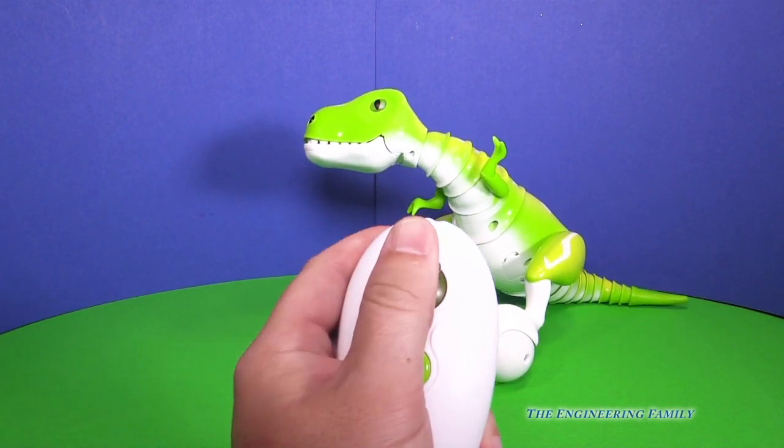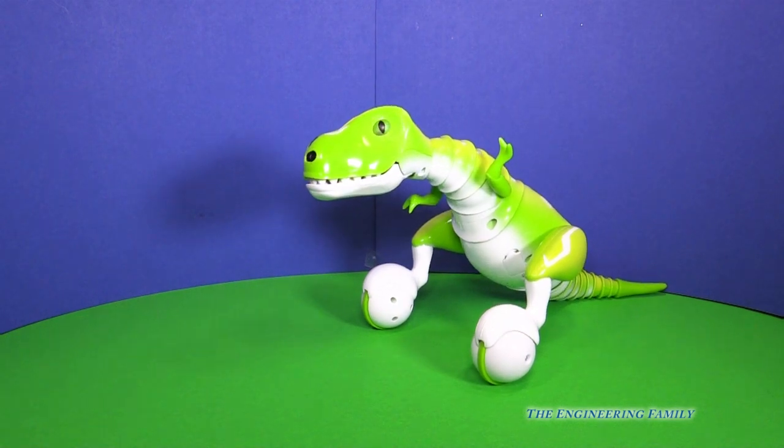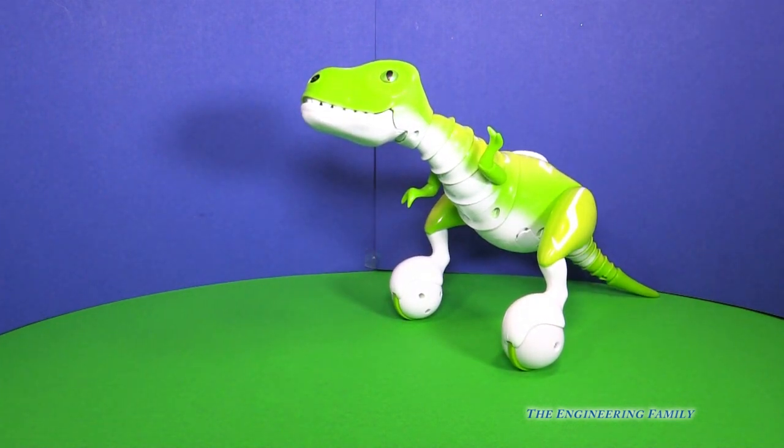Zoomer is a remote controlled dinosaur that acts a lot like a real pet. In fact, sometimes he'll even get a little angry.